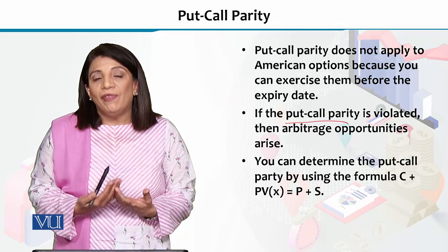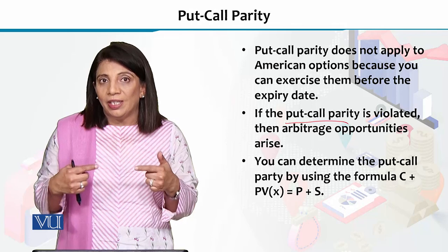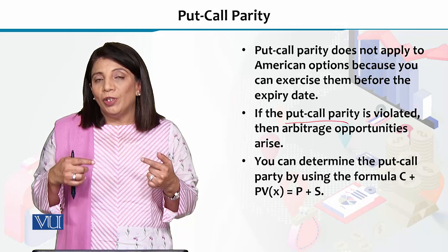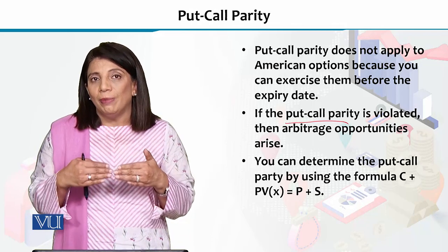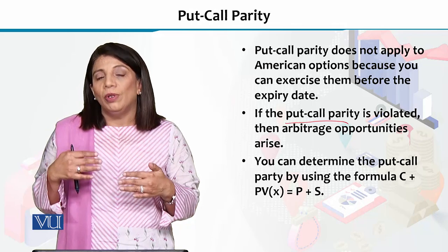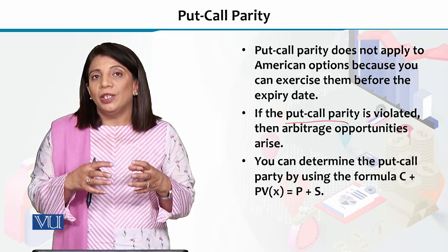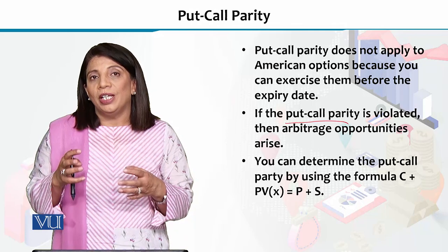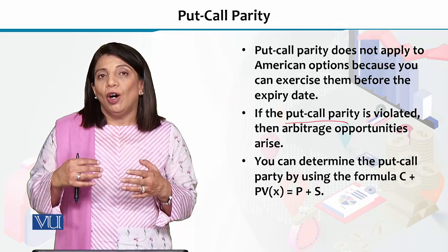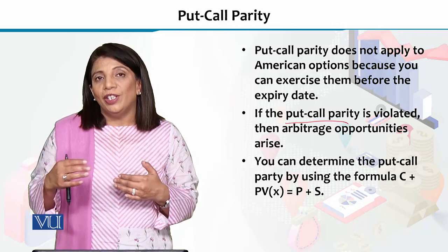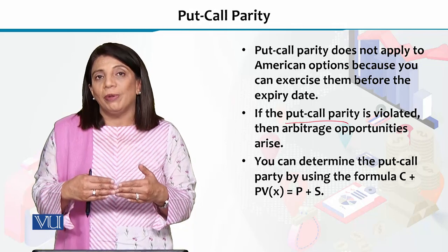If the strike price and the expiration date are the same but the prices of the put and call are not equal, then arbitrage becomes a possibility. Arbitrage means that for the instrument whose price is higher, demand will increase and supply will be short, which will drive the price down eventually. The investors exploiting this price difference will push the price back down until put-call parity is re-established.